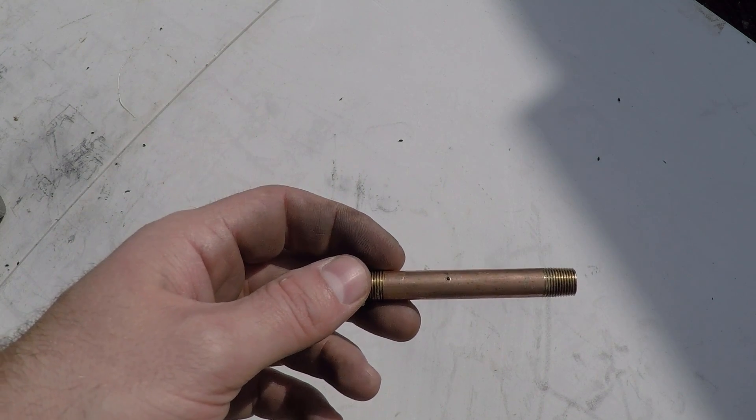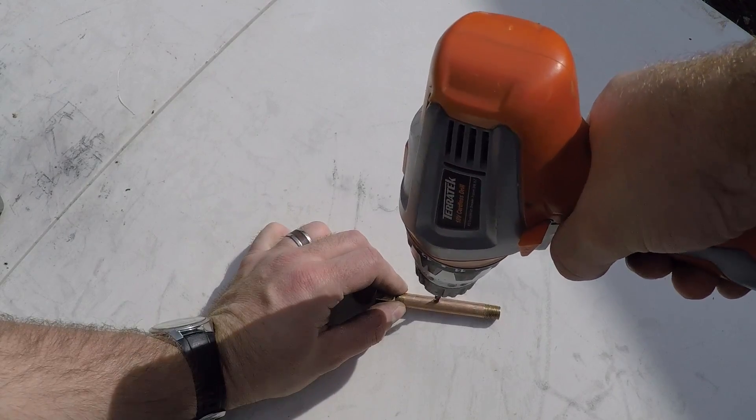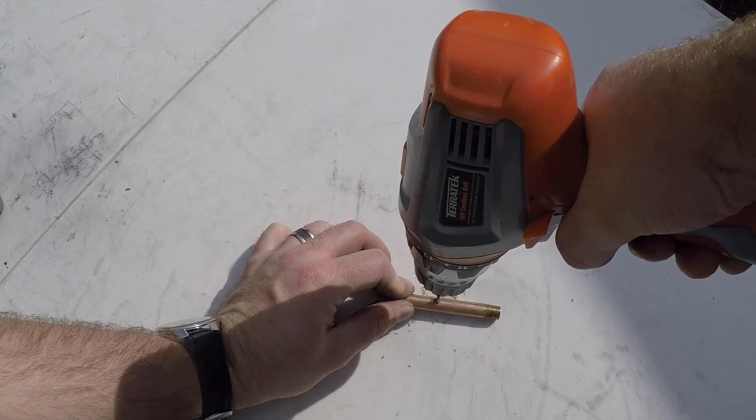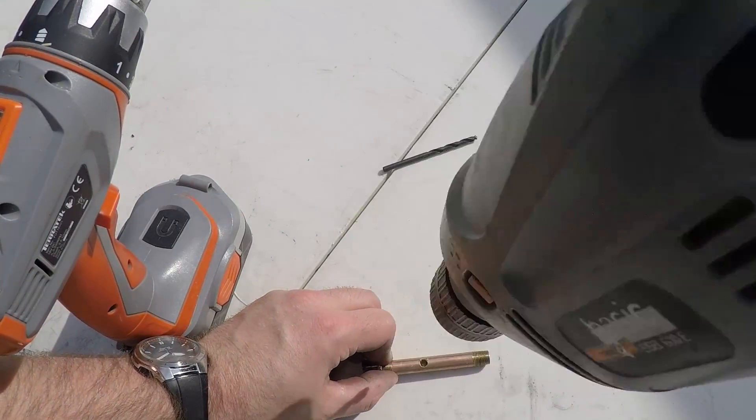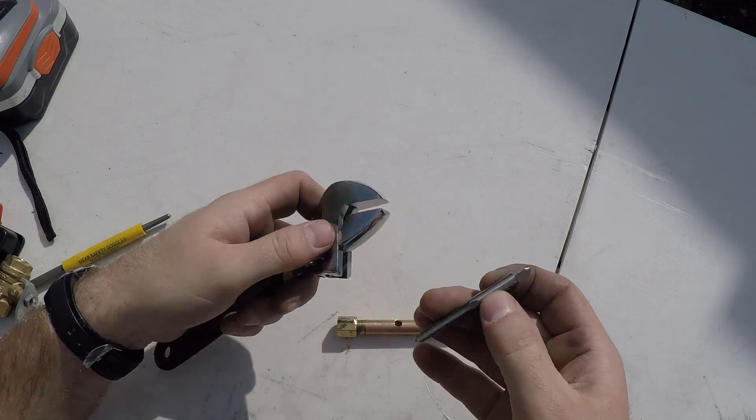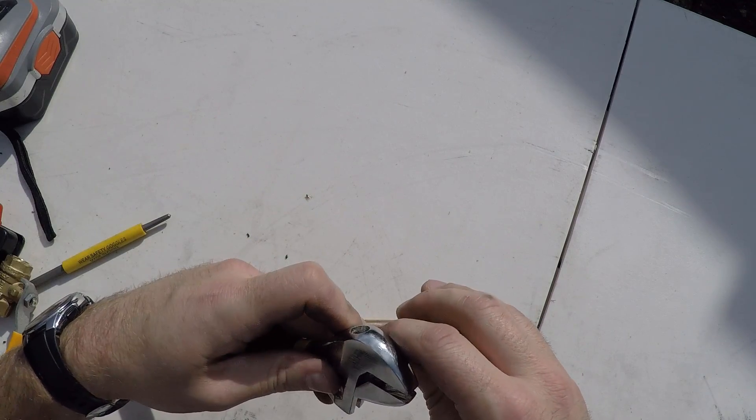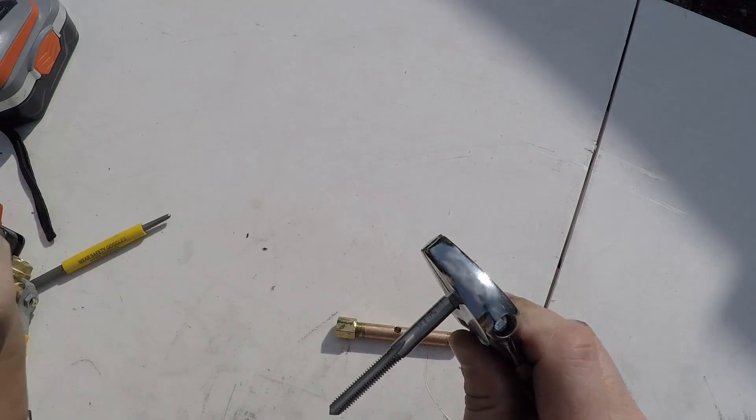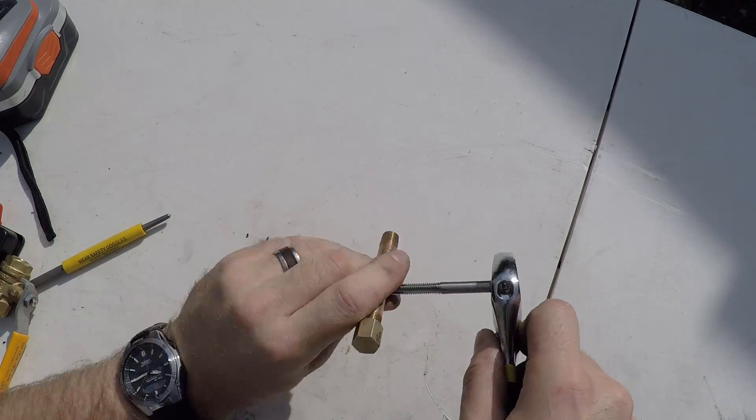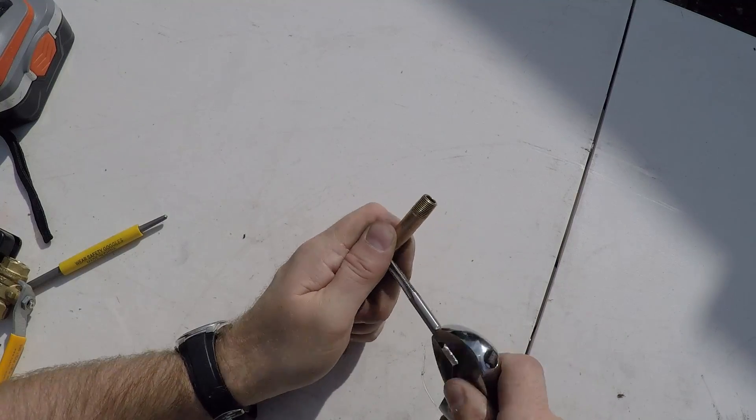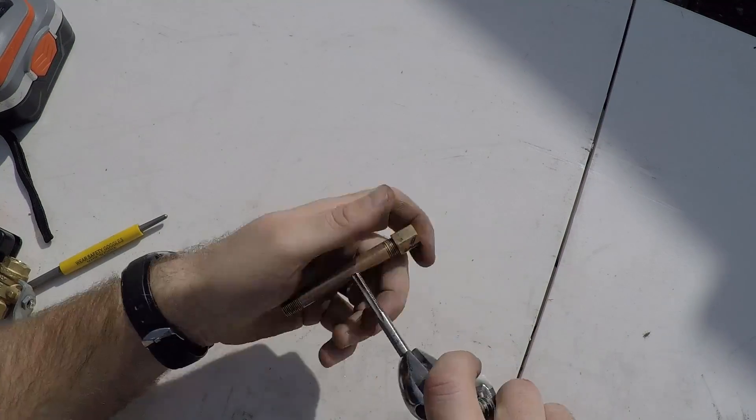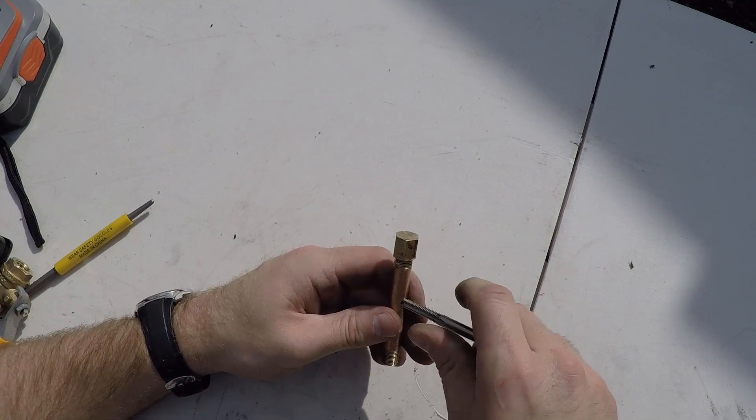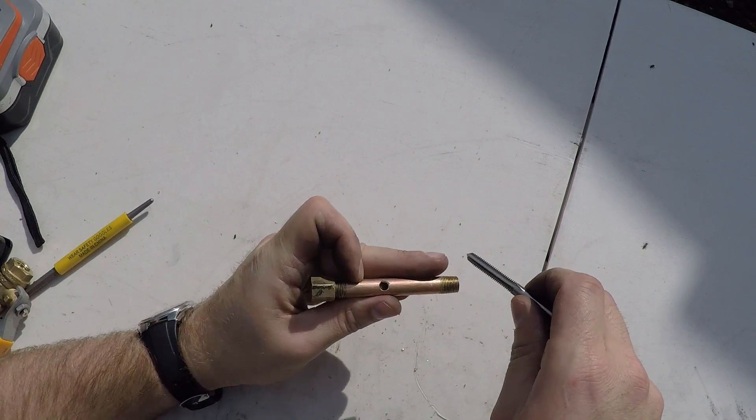Now that we have the hole drilled we can tap the hole. M6 tap. If you don't have a tap wrench you can hold it using an adjustable wrench. Not recommended, but it'll get the job done in a pinch. You just have to be extra careful about holding it perpendicular and square to your work. Not a perfect thread, but it'll get the job done.